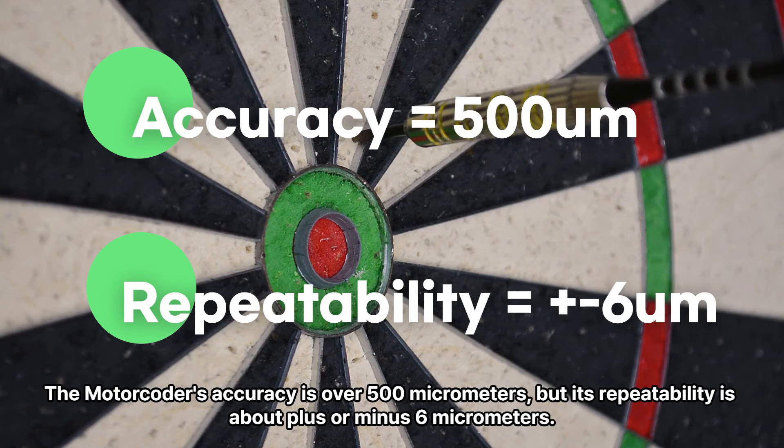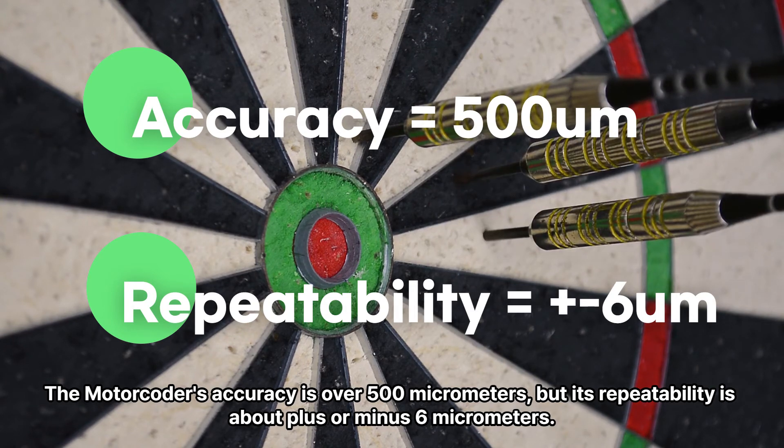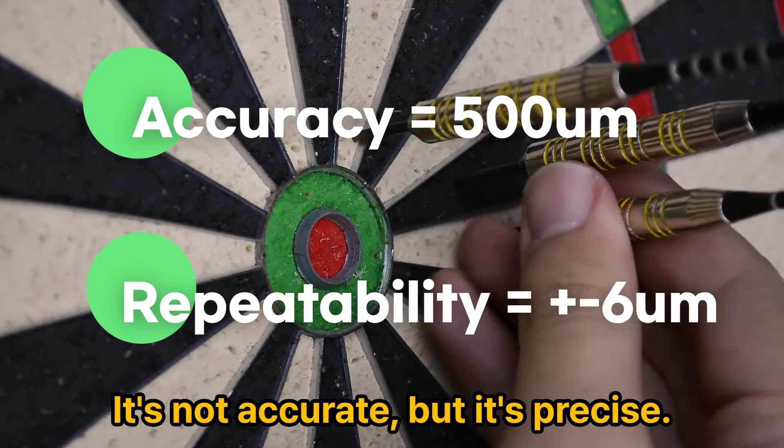The motor coder's accuracy is over 500 micrometers, but its repeatability is about plus or minus 6 micrometers. It's not accurate, but it's precise.